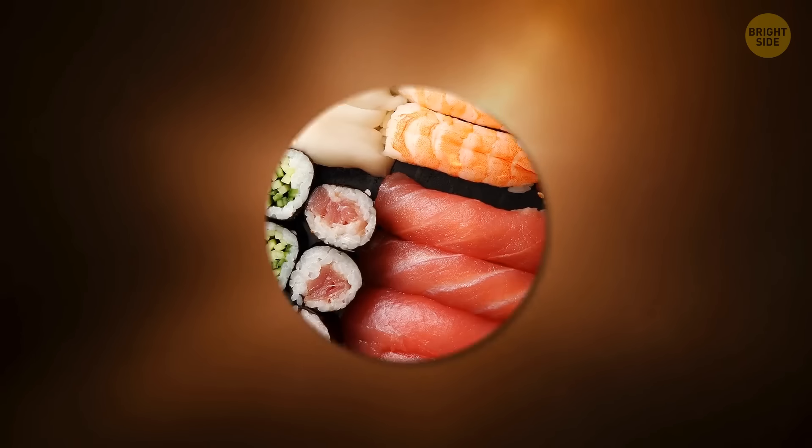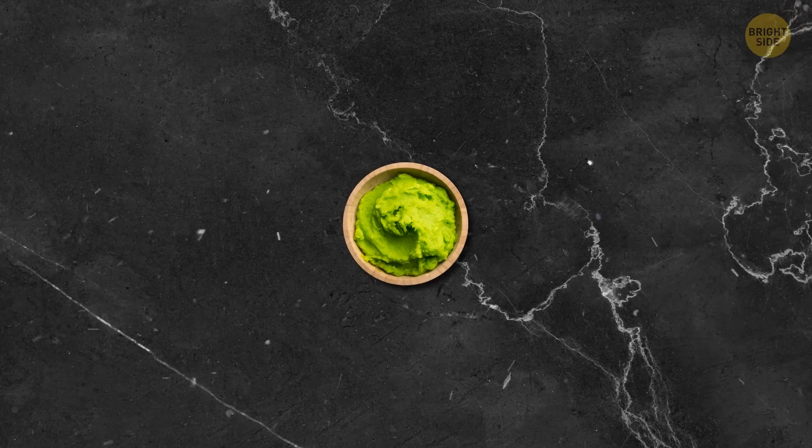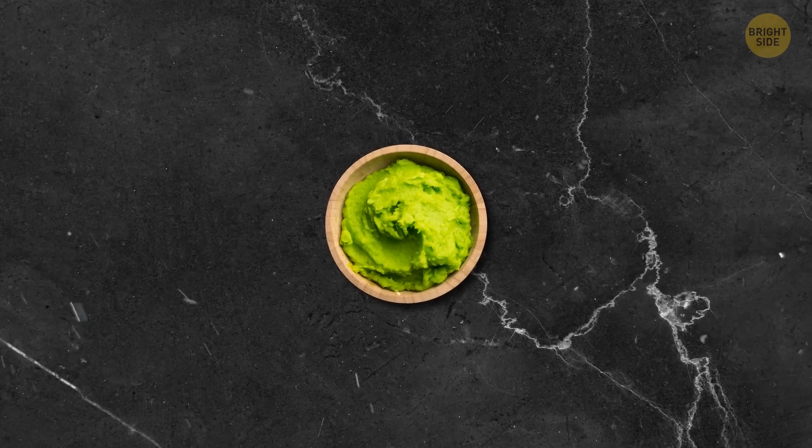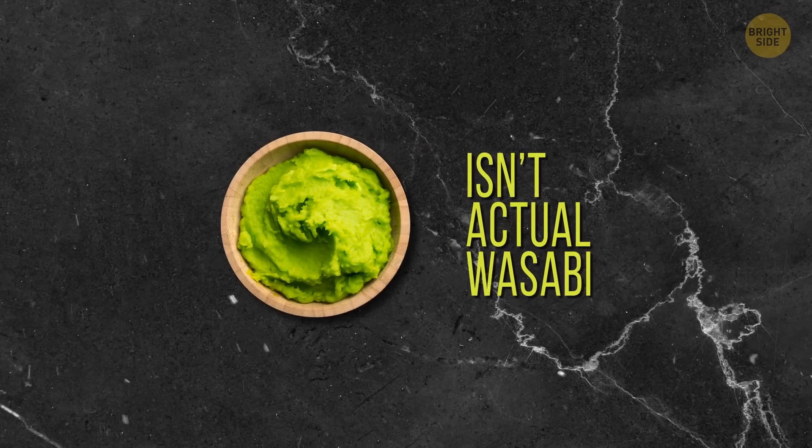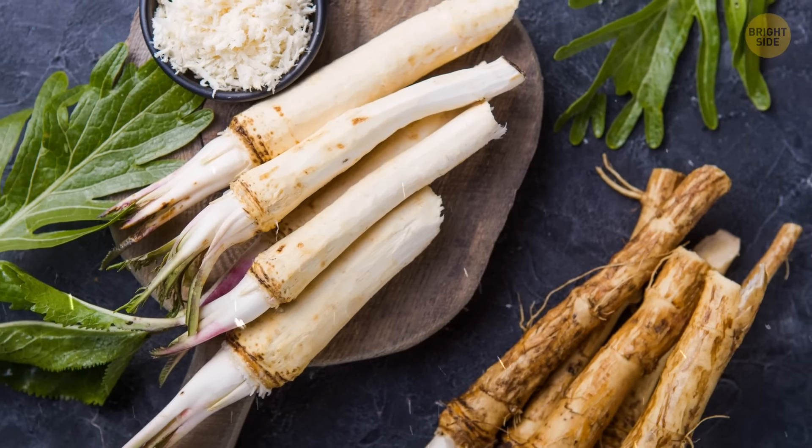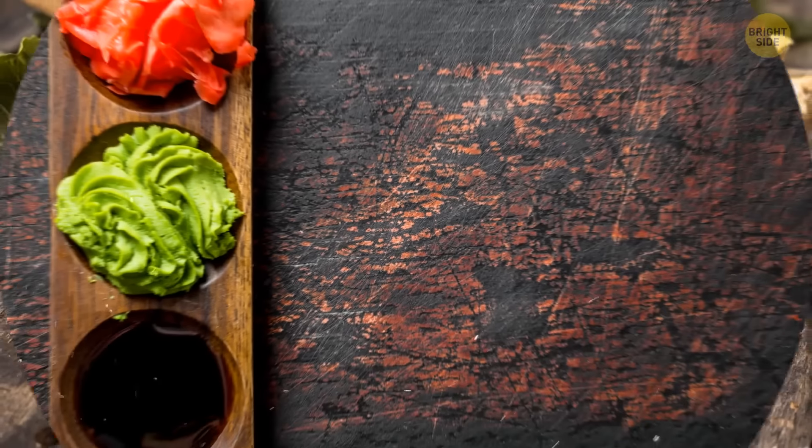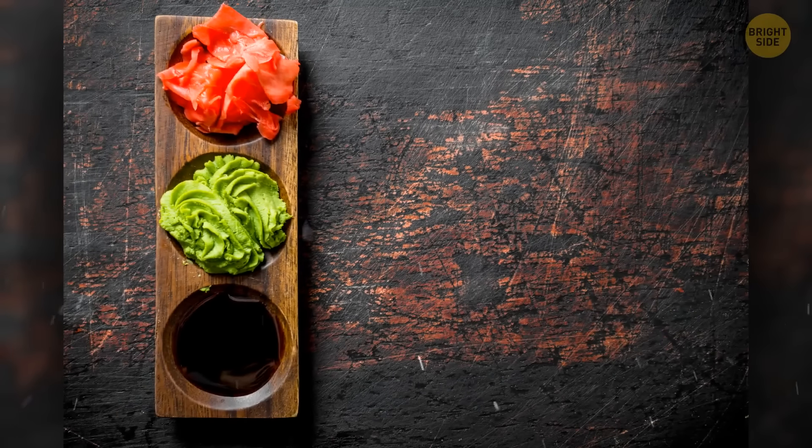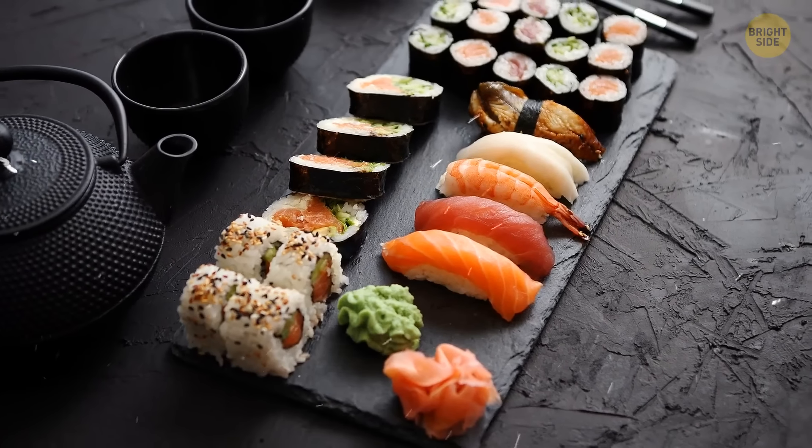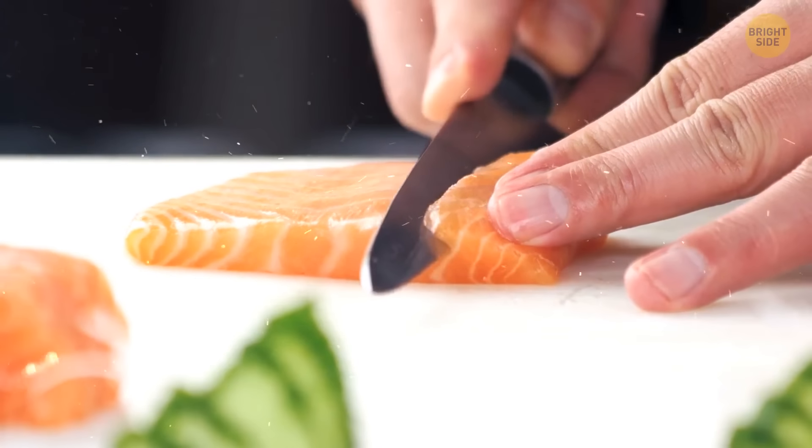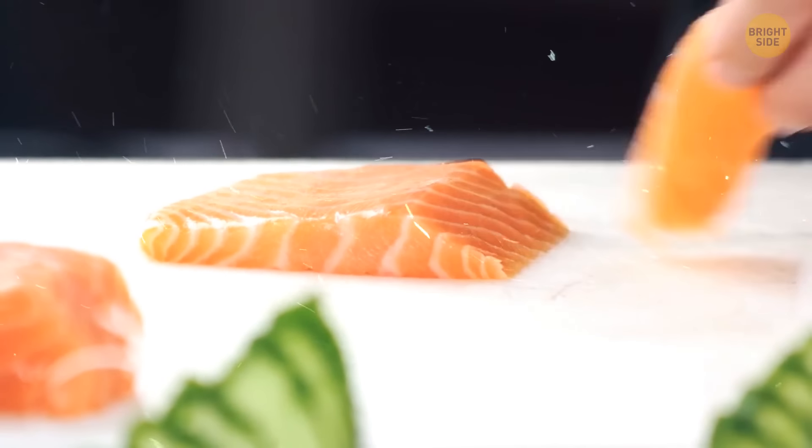Now, if you happen to be a sushi lover, you might already know that the green paste they usually serve with it isn't actually wasabi. It's simply horseradish, dyed green to look exotic. The real thing has a milder taste, and it's pretty expensive too. It's easy to tell if it's real or not. If it isn't made right in front of you, then it's not wasabi.